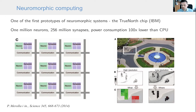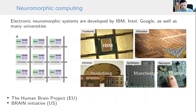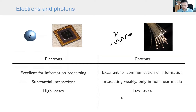There are many other neuromorphic systems developed in companies and academia. Big projects such as the Human Brain Project and the Brain Initiative also include development of neuromorphic systems. However, these were all electronic systems. In this talk, I would like to consider optical systems for this kind of information processing.